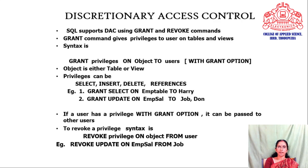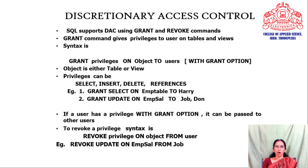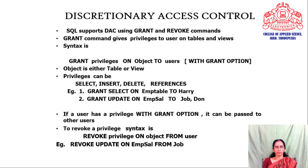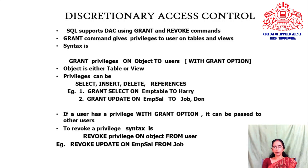SQL supports discretionary access control using the grant and revoke commands. The grant command gives privileges to users on tables and views. The syntax is: grant privileges on object to users, with an optional 'with grant option'. The object can be a table or view, and privileges can be select, insert, delete, or references. 'References' means we can assign a foreign key to a table or view using this privilege. For example: 'grant select on EMP_table to Harry' — the user Harry now has privileges to view all tuples in the relation EMP_table.